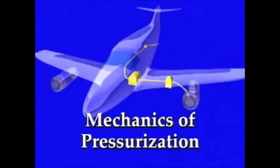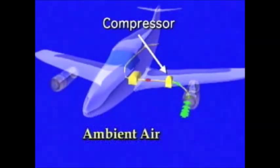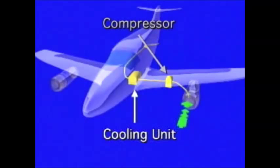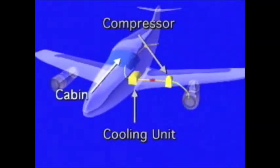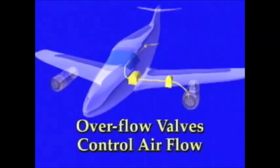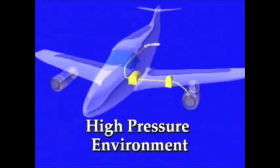What are the basic mechanics of pressurization? Ambient air is introduced into a compressor. Once the air is compressed, it heats up rapidly. The heated air is then sent through a cooling unit and introduced into the cabin. By use of overflow valves, the air comes in quicker than it leaves and creates a high pressure environment.